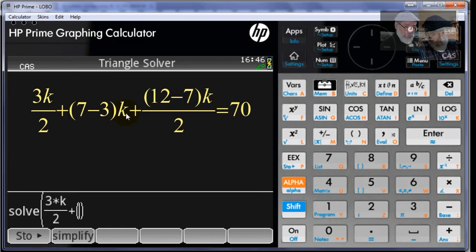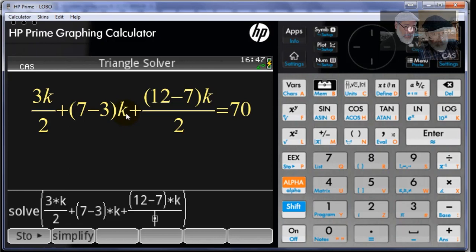3 times k. Do not leave out the multiplication sign or you're going to get a syntax error. 7 minus 3 times k plus 12 minus 7 multiplied by k divided by 2, that is equal to 70. What do I want to solve for? Comma for k. Enter.